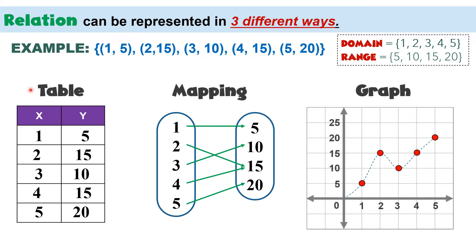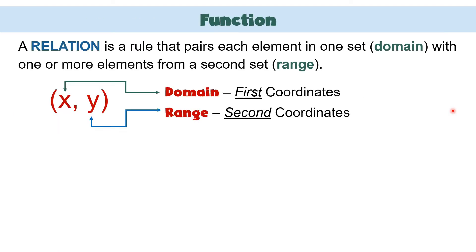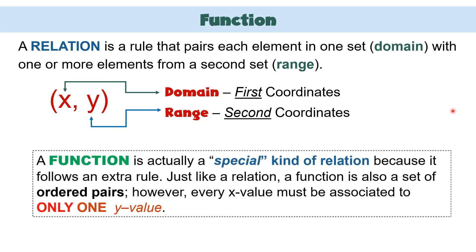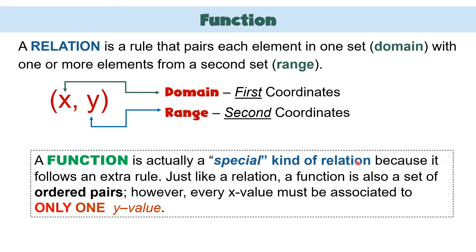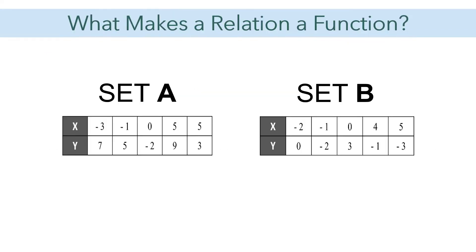So these are the three different ways on how we can present relation. Now let's go back to the definition of relation — how can we relate this to function? When we say function, it is actually a special kind of relation. We call it special because it follows an extra rule: every x value must be associated with only one y value. It means x must only have one y partner.